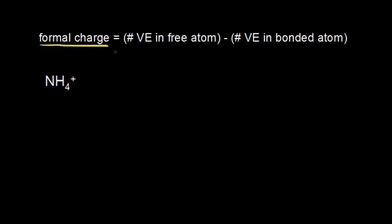We'll get back to the formal charge definition in a minute. For right now, let's draw a quick dot structure for the ammonium cation, NH4+. The first thing you do is find the total number of valence electrons. You look at the periodic table and find nitrogen, which is in group five — so nitrogen has five valence electrons. Each hydrogen has one, and we have four of them, giving us nine electrons. However, there's a plus one charge, meaning this is a cation, meaning we're going to lose an electron. So instead of representing nine, we're going to represent eight electrons in our dot structure.